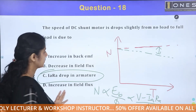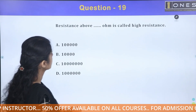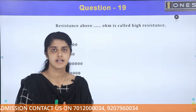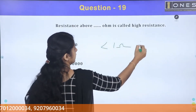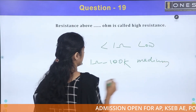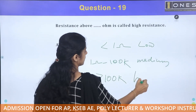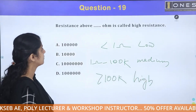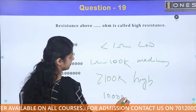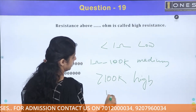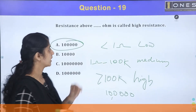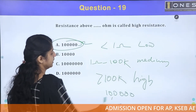Resistance above a certain value is classified as high resistance. Low resistance is less than 1 ohm. Medium resistance ranges from 1 ohm to 100 kilohms. Above 100 kilohms is high resistance. So the answer is option A, high resistance above 100 kΩ.